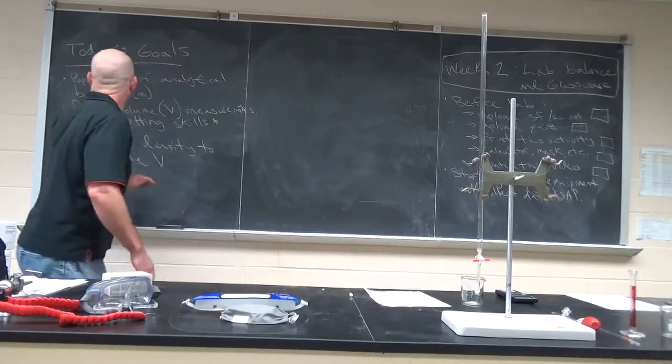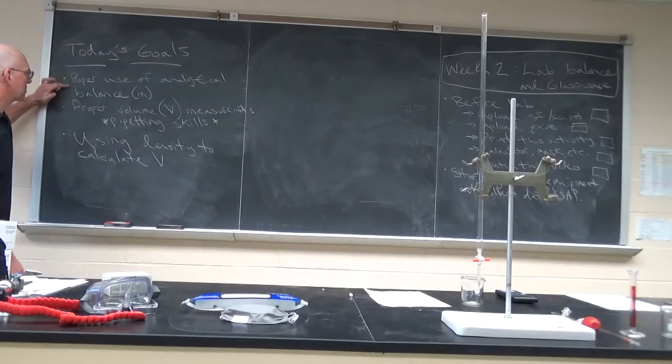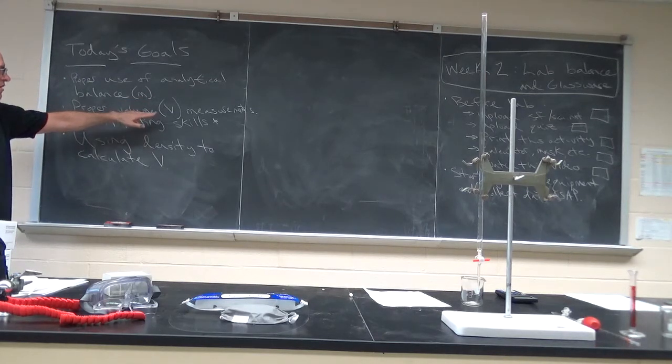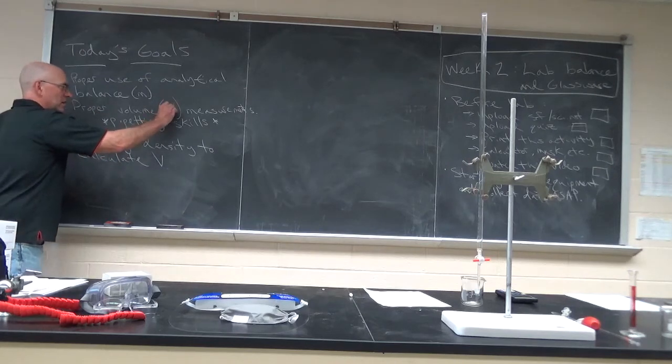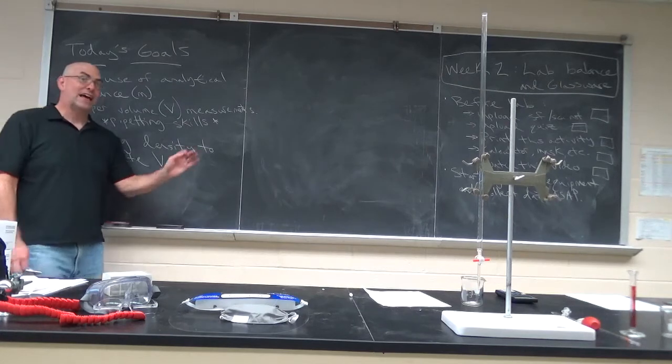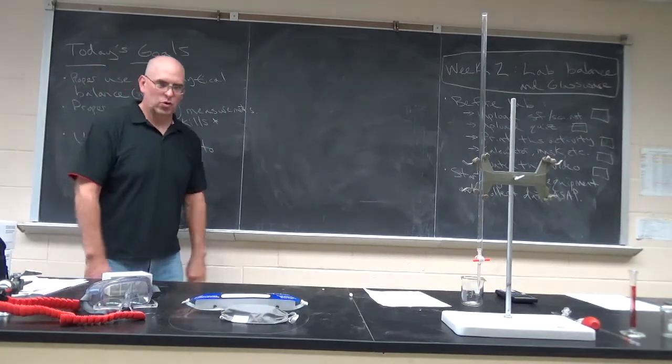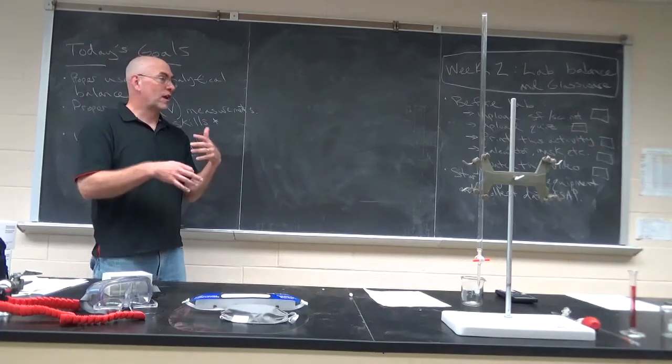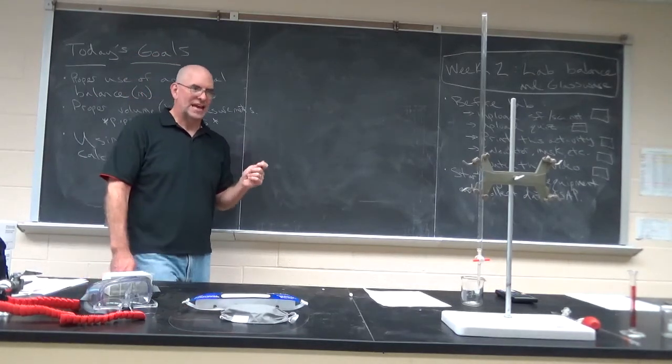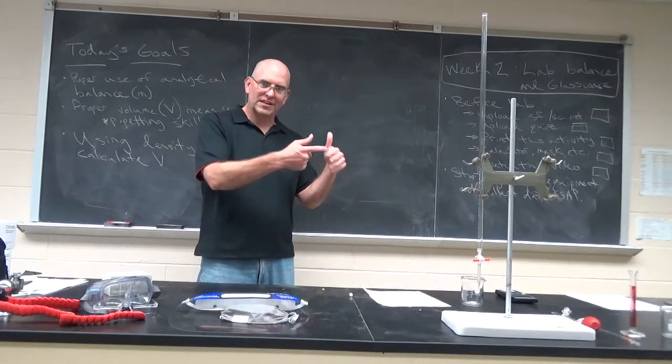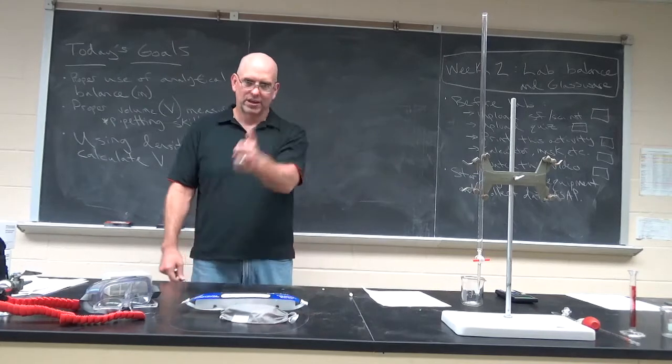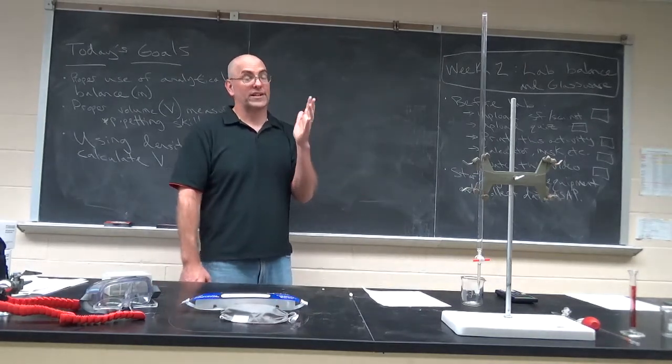Okay, so the basic goals here are, how do you properly use an analytical balance to determine mass? How do you properly measure volume, which is a capital V, lowercase v is velocity, and then a piece of equipment called a pipette. That is an essential piece of equipment in a laboratory. It doesn't look very high-tech, but if you ever do any kind of laboratory work, pipetting is a big skill.